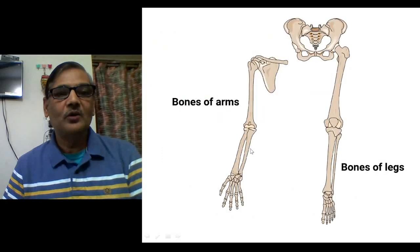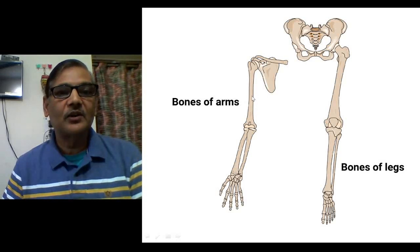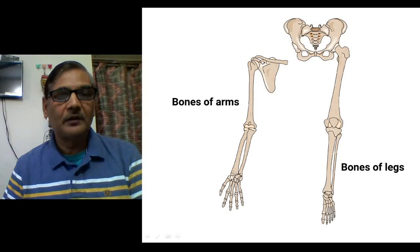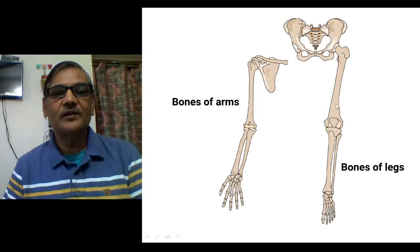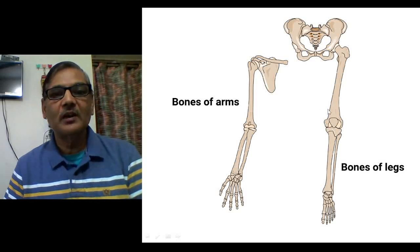In tetrapods — including our own case — limbs are an example of serial homology. In the forelimb, we have bones: humerus, followed by radius and ulna, then carpals, metacarpals, and phalanges. In the hindlimb, exactly the same way, there is the femur, then tibia and fibula, again two bones like radius and ulna, and then tarsals, metatarsals, and phalanges. So the basic arrangement of bones is the same.